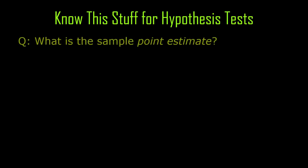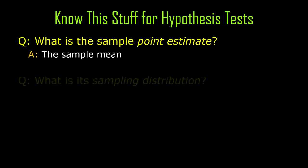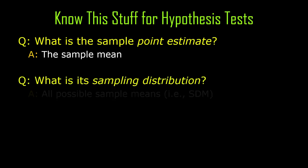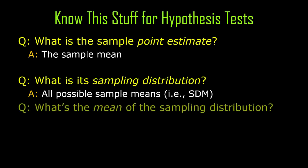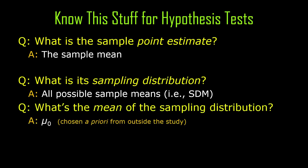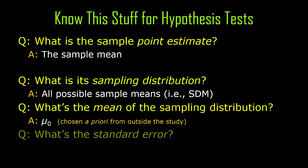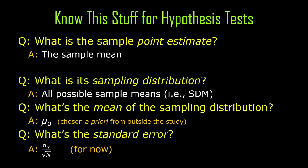So you need to know all this stuff to do hypothesis tests. You need to know what the sample point estimate is — so far it's going to be the sample mean. What's the sampling distribution? It's all possible sample means if the null hypothesis is true — the sampling distribution of the means implied by the null hypothesis. What's the mean of that sampling distribution? It's going to be mu zero, chosen from somewhere outside the study. And the standard error is the standard deviation of the sampling distribution — the standard error of the mean, which is the standard deviation of the raw scores in the population divided by the square root of the sample size.